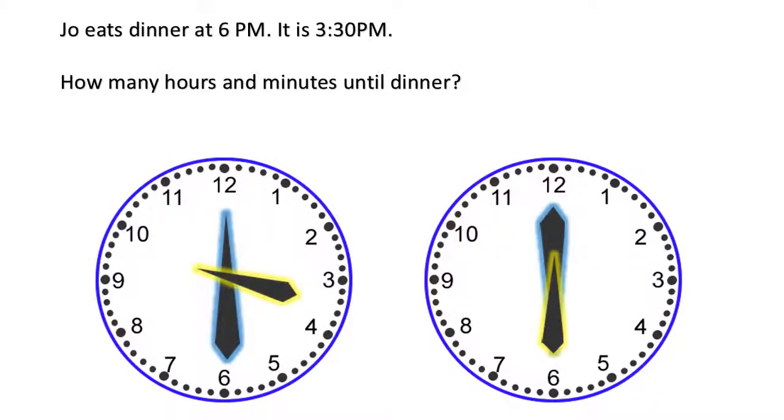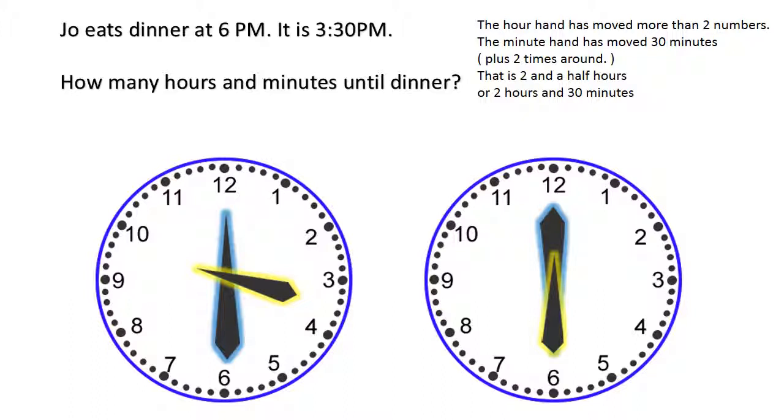Joe eats dinner at 6 p.m. It is 3:30 p.m. How many hours and minutes until dinner? The hour hand has moved more than two numbers. The minute hand has moved 30 minutes plus two times around. That is two and a half hours or two hours and 30 minutes.